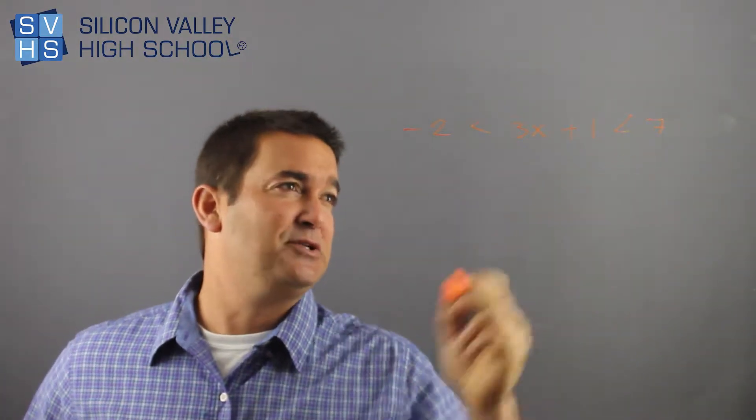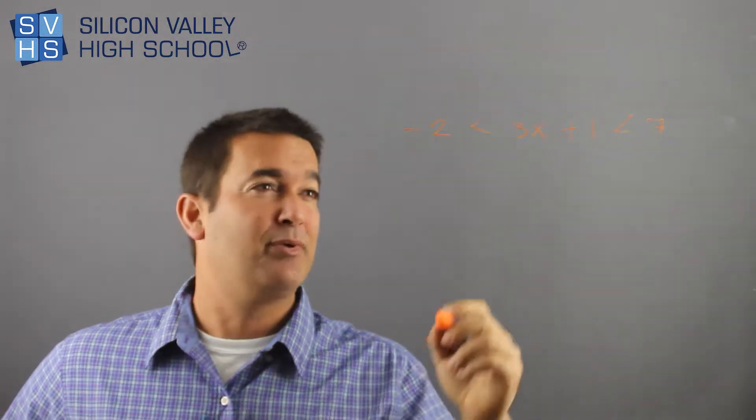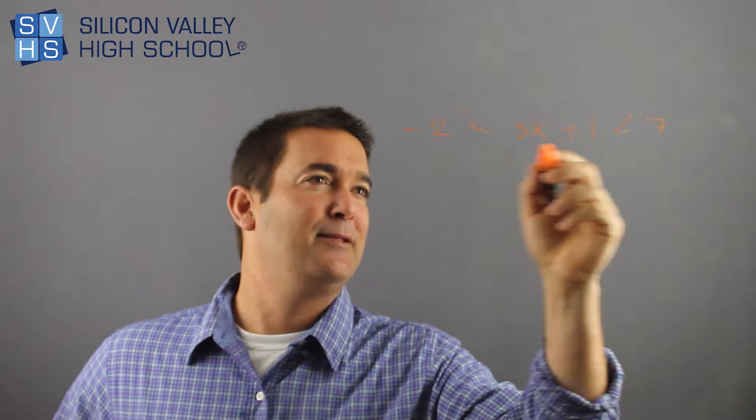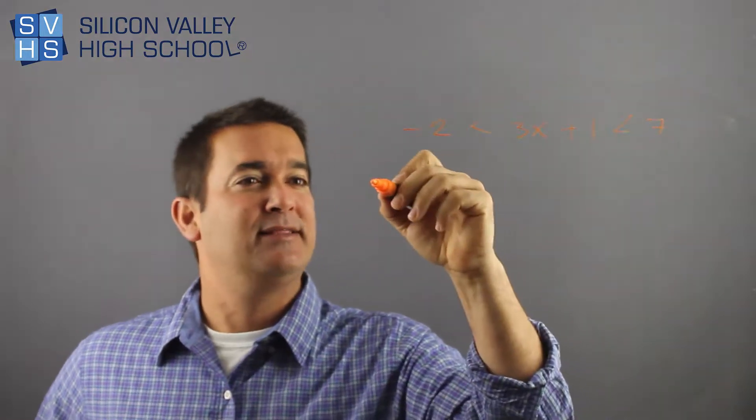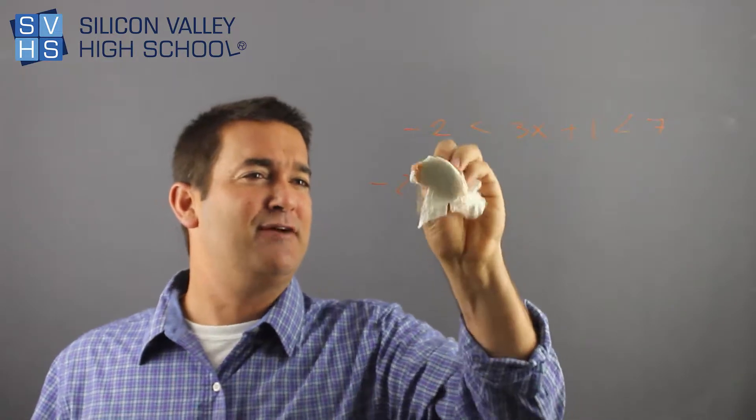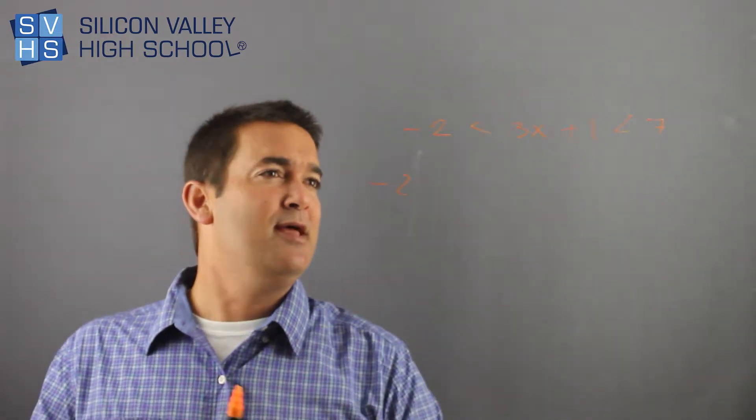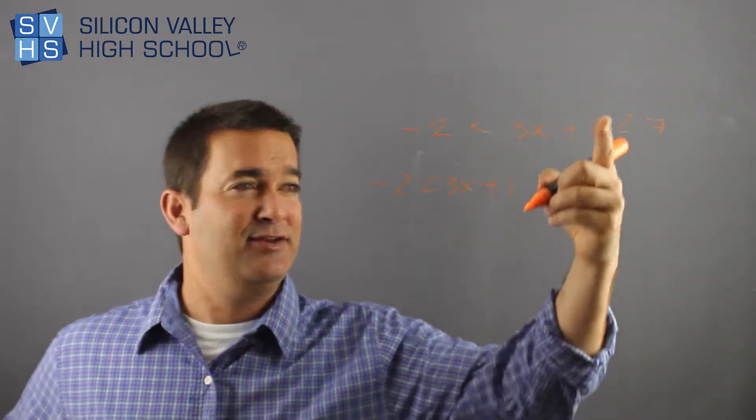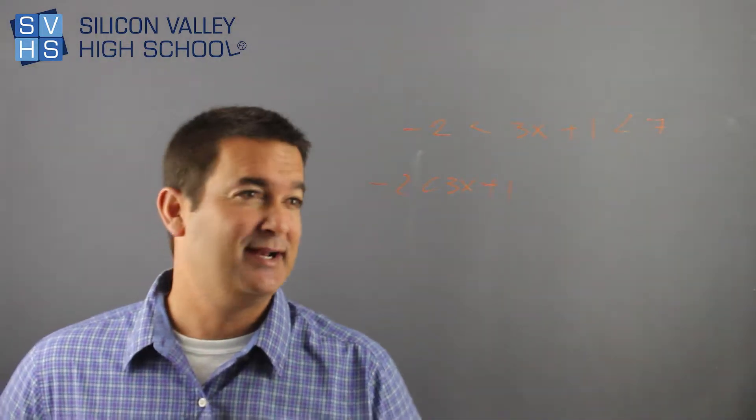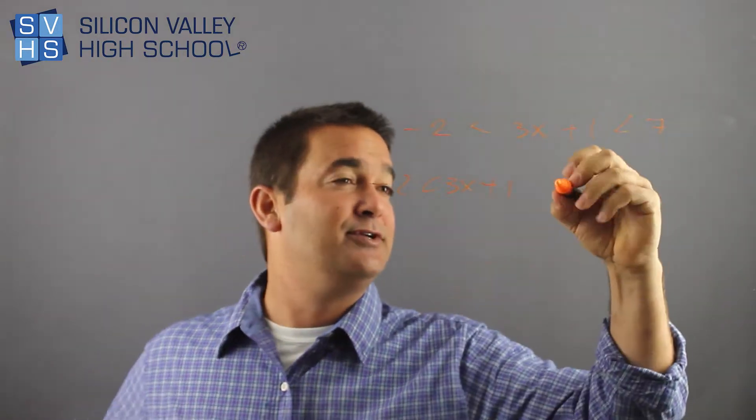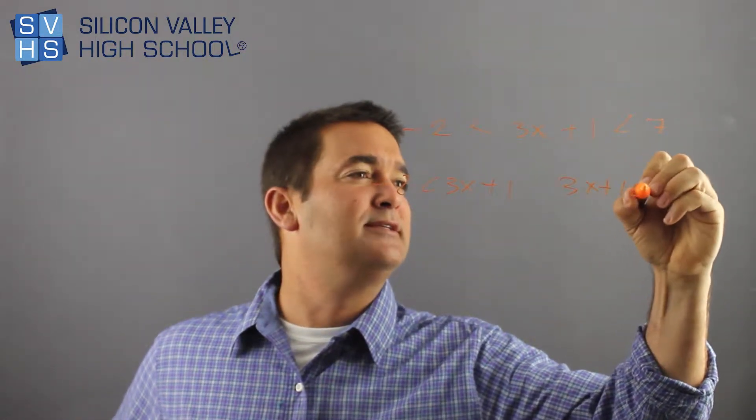This is obviously two problems somehow tied into one problem, so some kids write them differently. They're like, this is super complicated, I'm going to write this one: negative two is less than 3x plus one. You see how it stops at the next inequality sign? And then over here, they'll do 3x plus one is less than seven.